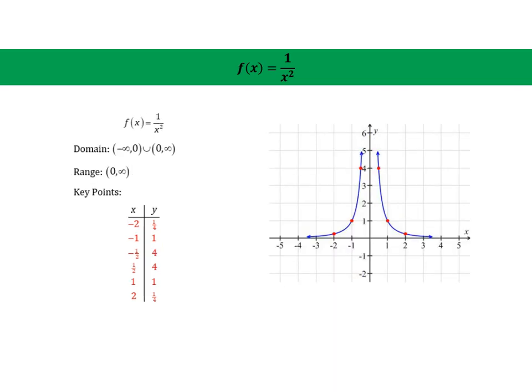Another function that we can add to our library of parent functions is f of x equals 1 over x squared. So this is not the reciprocal function, but we still cannot have x be zero.